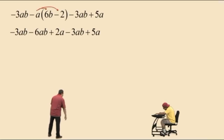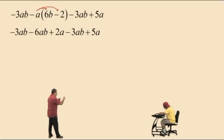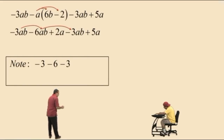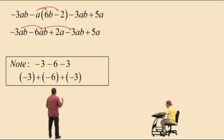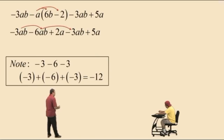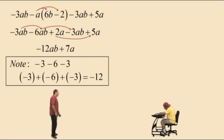Now we bring down our work and look for like terms — the variables have to be identically the same. We have ab terms and terms that just have an a. So we group the ab's: negative 3 plus negative 6 plus another negative 3 — that's negative 3 plus negative 6 plus negative 3, which equals negative 12. So negative 3ab plus negative 6ab plus negative 3ab is negative 12ab. Now how about 2a's plus 5 more a's? That's 7a. Bring down your work.